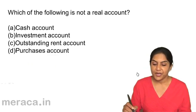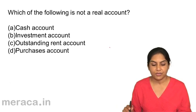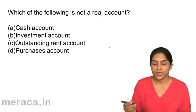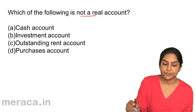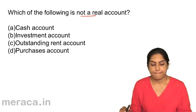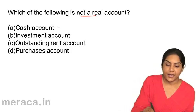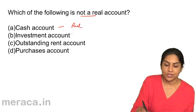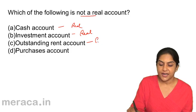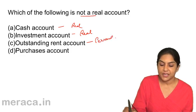Which of the following is NOT a real account? A: cash, B: investment, C: outstanding rent, D: purchases account. Cash is a real account. Investment is a real account. Outstanding rent is not real — it's a personal account.